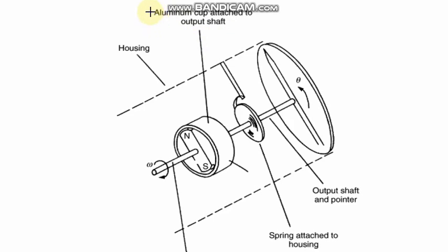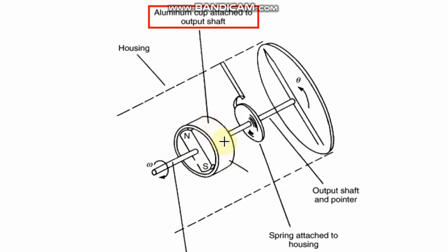Here is the aluminium cup attached with the output shaft. This complete assembly is the housing for this eddy current tachometer. It is also known as drag cup tachometer. When this shaft rotates, it tends to drag this aluminium cup, which is not directly attached with the magnet but is attached with another spindle — that is the output shaft.